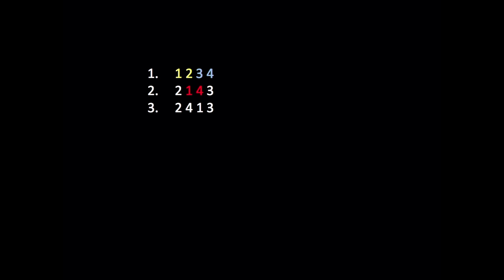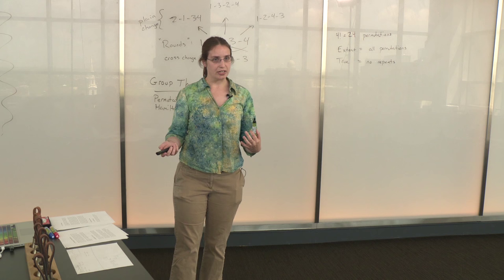And so we get to the order two four one three. Now we can repeat that sort of sequence: cross change, a plain change, a cross change, a plain change. And after eight of these changes, we get back to rounds again. But you see, we've hit things in a different order than we did the first time we went through all these permutations. Now this is a very common pattern in change ringing. It's called plain hunt.